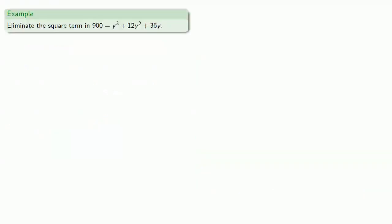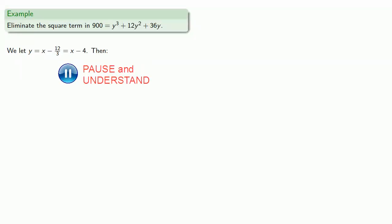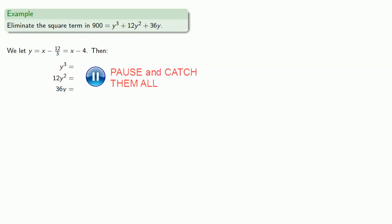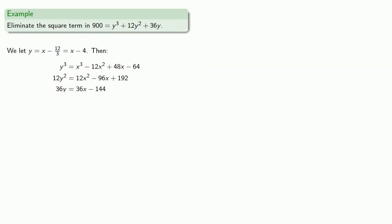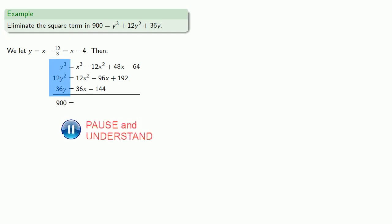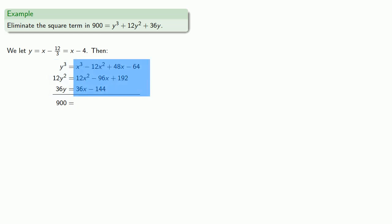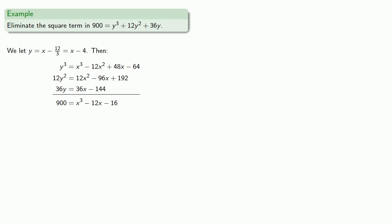For example, let's try to eliminate the square term in this cubic equation. We'll use the transformation y = x - 12/3, that is x - 4. We want to find y³, 12y², and 36y. When we put these terms together, we get 900, and our square terms drop out.